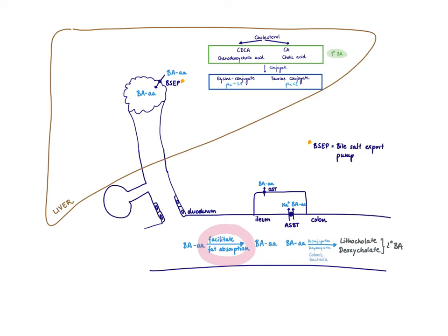About 10% of the bile acids will reach the colon, where they are deconjugated and dehydroxylated by colonic bacteria to form lithocholate and deoxycholate — our secondary bile acids. Some of these will be passively reabsorbed, but they also show up in the feces. This concludes the video on the metabolism of bile acids.